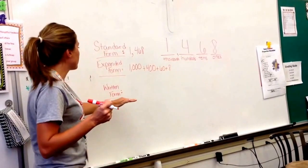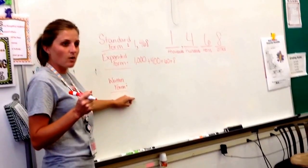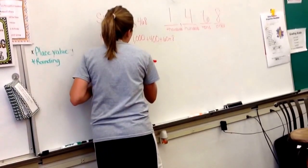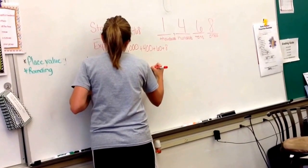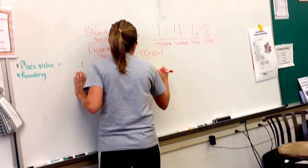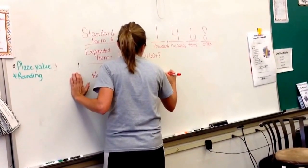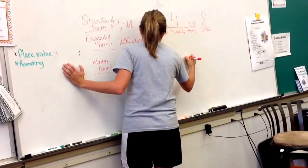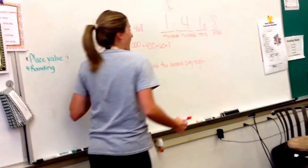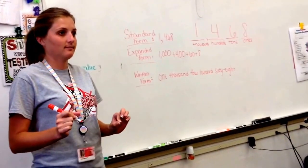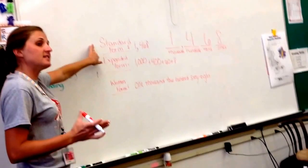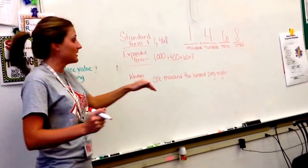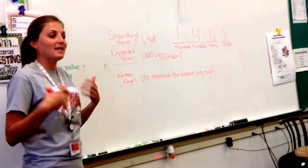I can also use written form. Written form is when I write the words, like one thousand, four hundred, sixty, eight. I simply write it how I say it. Standard form is digits. Expanded form is pulling it apart into the value of each place. Written form is writing it how I say it.